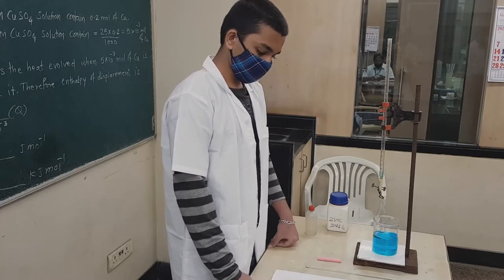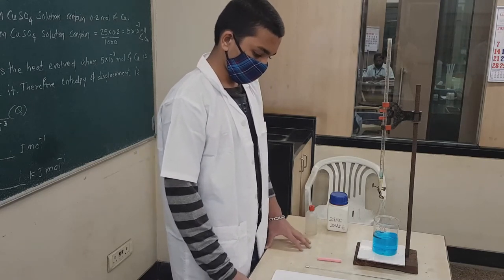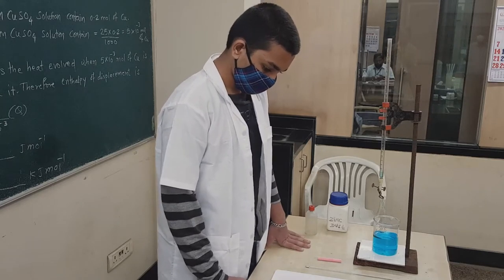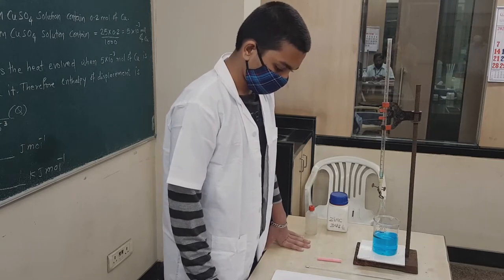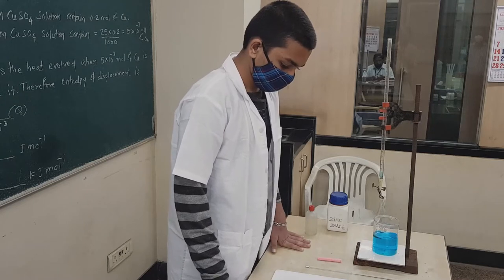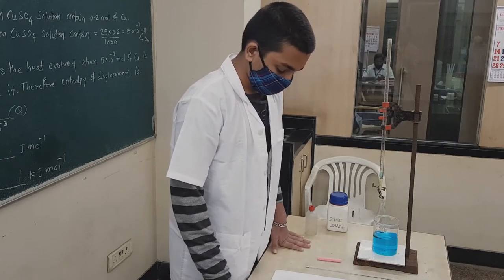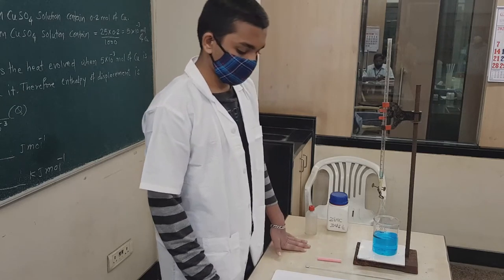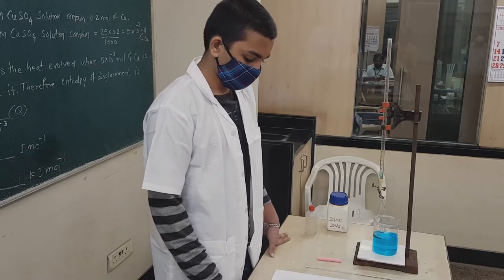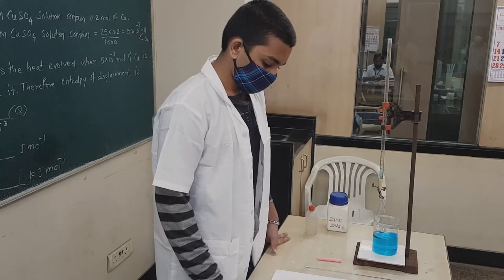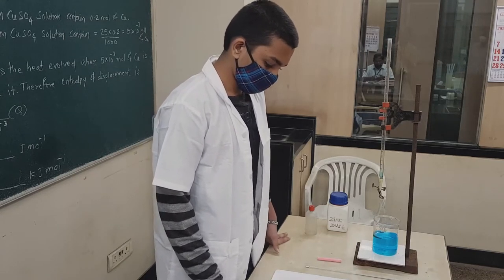Now in this experiment, zinc has a lower standard potential as compared to copper. So zinc will displace copper from copper sulfate solution. During this process, the amount of heat evolved we will calculate, and that will be the heat of displacement.